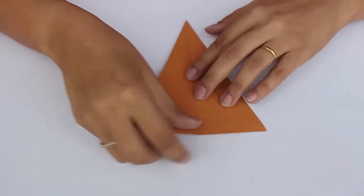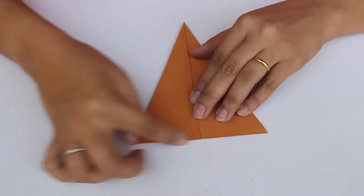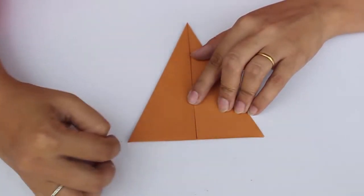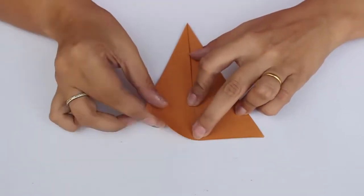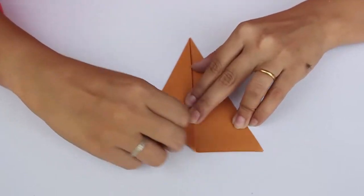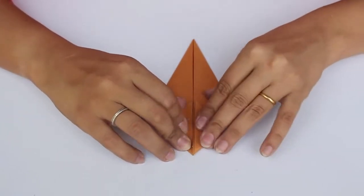Turn it over again. Get this entire edge, divide this into two like this and get this edge to the central line like this.